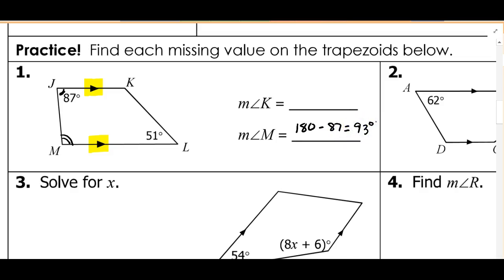We'll do the same thing on the other side. Angle K and angle L, that's a pair of same side interior angles, so they're also going to be supplementary. Angle K is going to be 180 minus 51 degrees or 129 degrees.